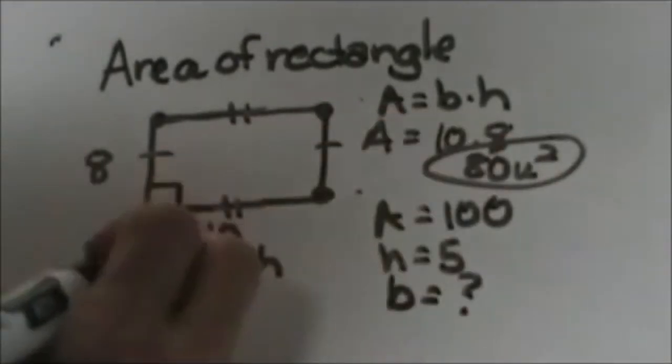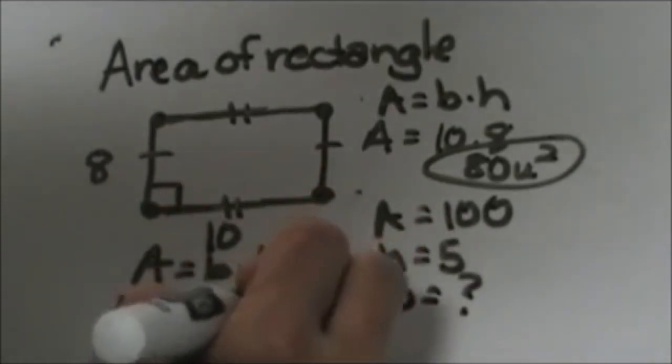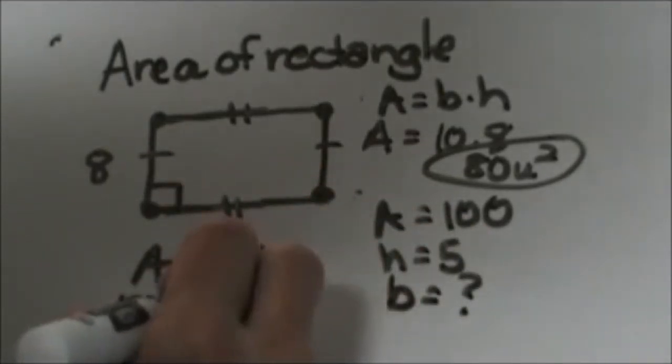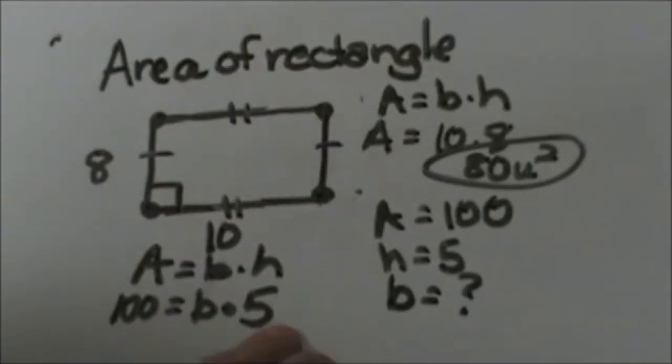We know the area is 100 so let's put 100 here and let's put our height as 5 and our unknown is b. So we end up with 100 is equal to b times 5.